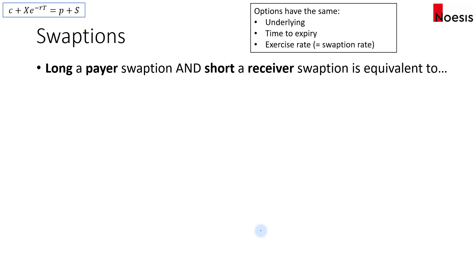Let's move on to swaptions. Swaptions are options that allow the buyer to enter into a swap to either pay fixed or receive fixed. For a payer swaption, the payoff is similar to a call option because we will exercise the payer swaption if the swap rate at expiration is greater than the swaption rate — so a long payer swaption is like a long call. For the receiver swaption, if you buy it, it gives you the right to enter into a swap to receive fixed, and it will be exercised if the swap rate at expiration is below the swaption rate — so it is like a put option.